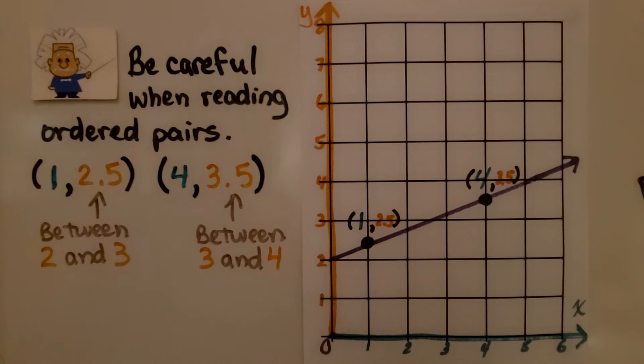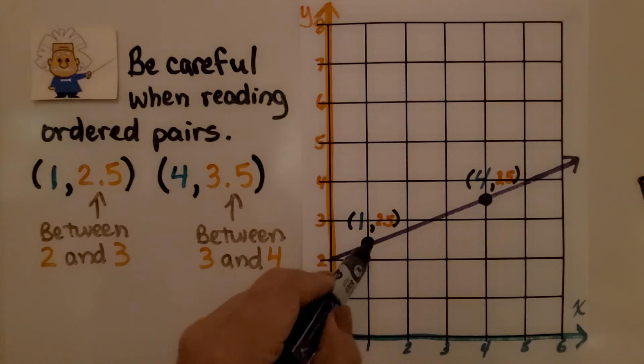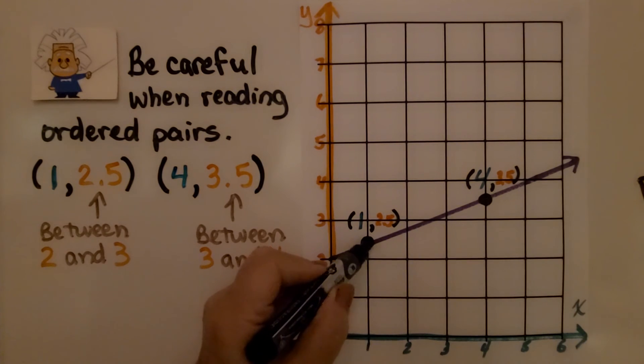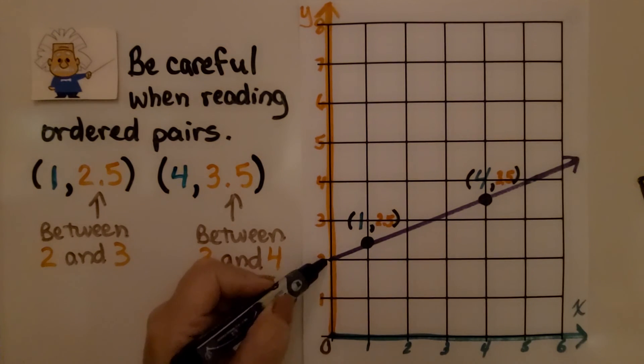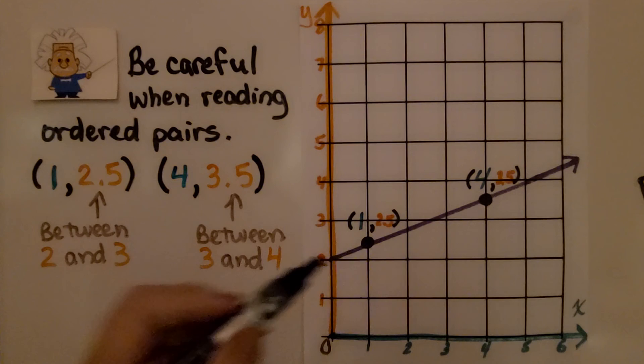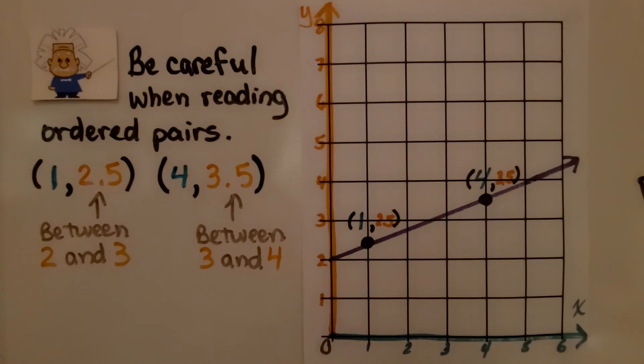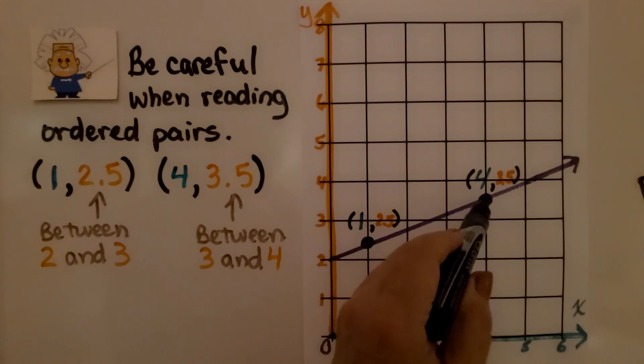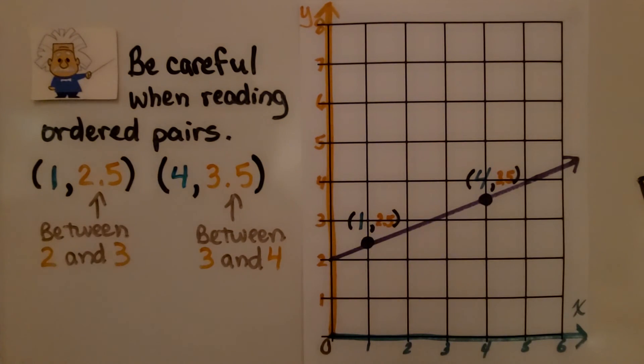Now, we need to be careful when reading ordered pairs. If they're not given, and we just see the points, we're going to need to read them carefully. Here we have 1 for x, and this point is in between the 2 and the 3. It's right in the center. So we say it's 2.5. And this point is 4 for x, but it's in between the 3 and 4 for y. So we say that's 3.5.